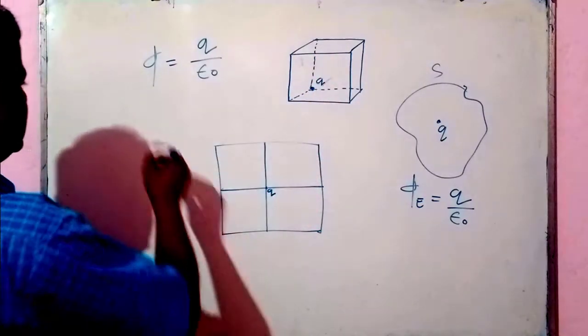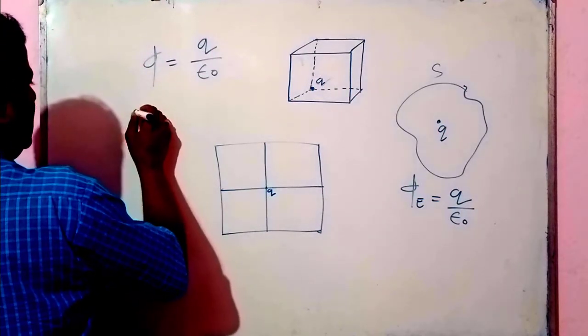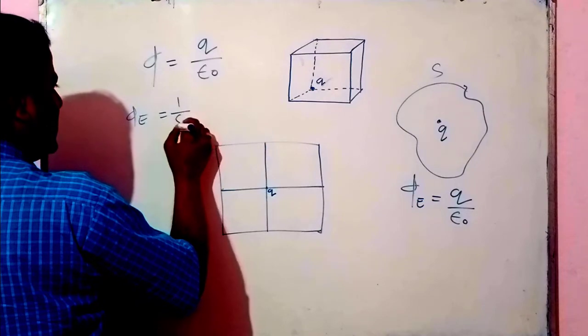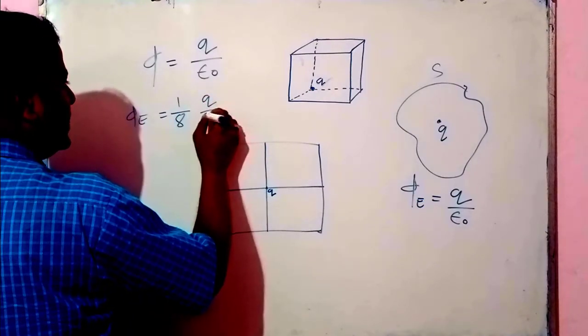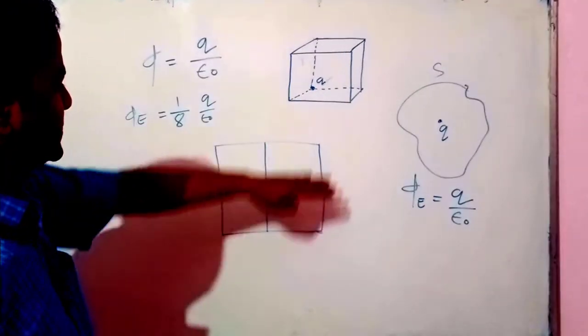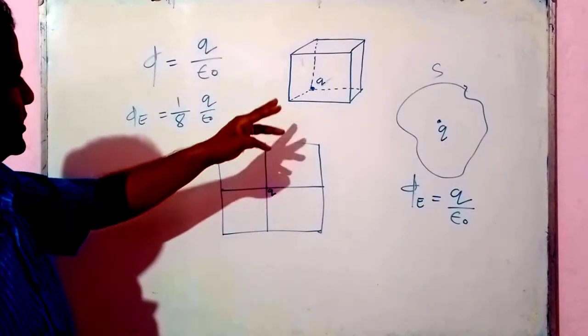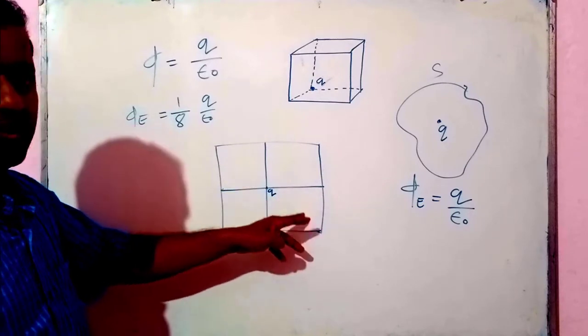And this is, in our question, this will be one by eight into q by epsilon naught, because this total flux q by epsilon naught will be shared among eight small cubes.